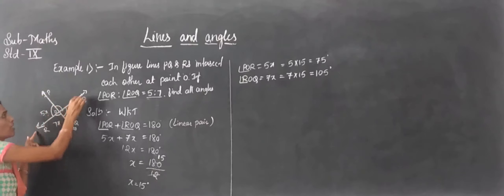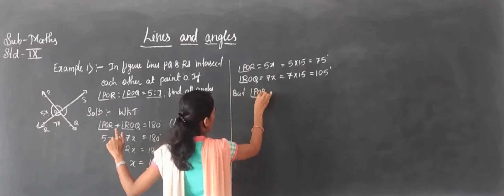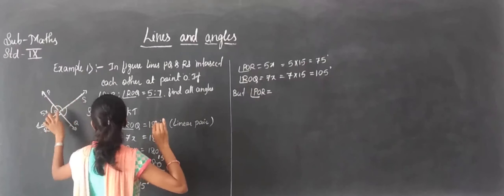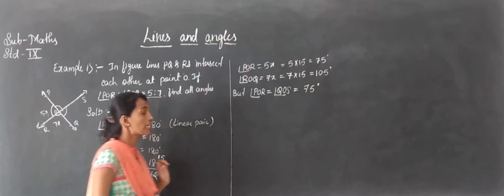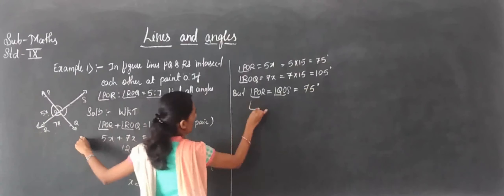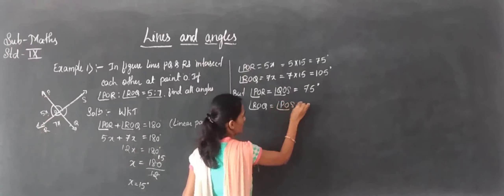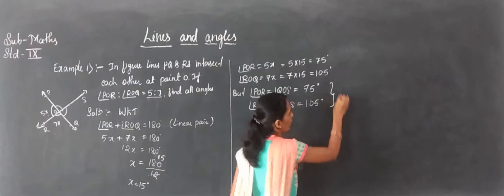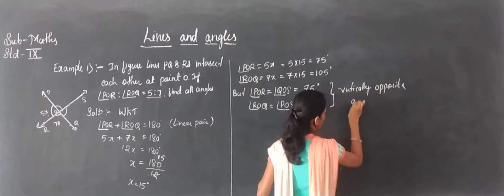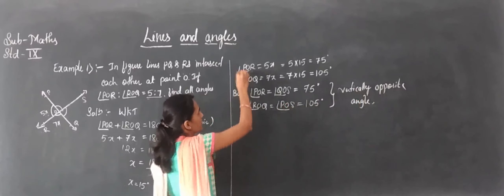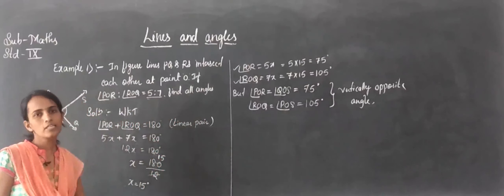Since vertically opposite angles are equal, angle POR equals angle QOS equals 75 degrees, and angle ROQ equals angle POS equals 105 degrees. So we have found all four angles using the linear pair formula and the vertically opposite angle theorem.